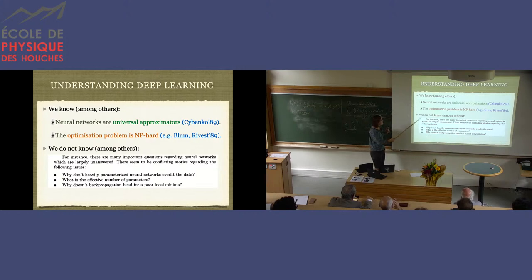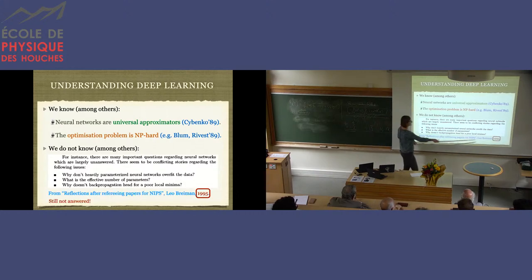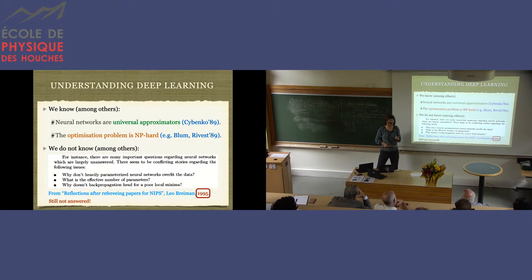So going a bit more in detail, what do we know, what do we not know? So these are some questions that a statistician called Leo Breiman, which is kind of a well-known, asked in a piece that he wrote already more than a quarter of a century ago. Why don't heavily parametrized neural networks overfit the data? What is the effective number of parameters? Why doesn't backpropagation, that's just a name for this gradient descent algorithm, head for a poor local minima? Why does it find a good local minima? These are still the questions that we are discussing today when discussing the theory of neural networks. It's fair to say that to first approximation, we still don't know.